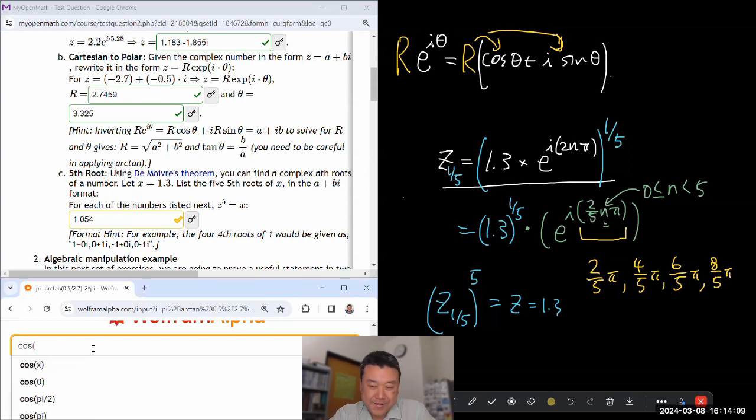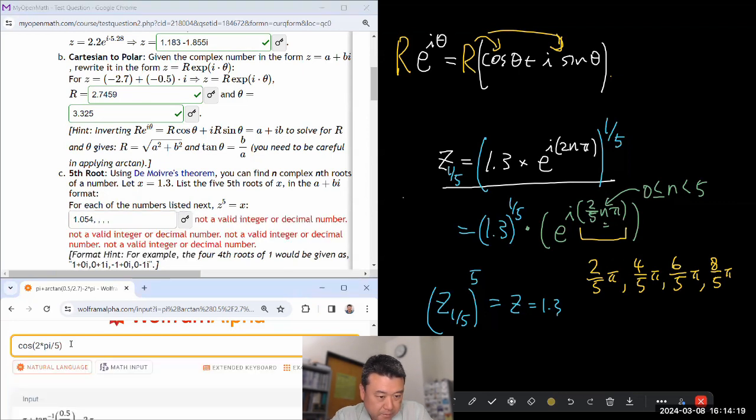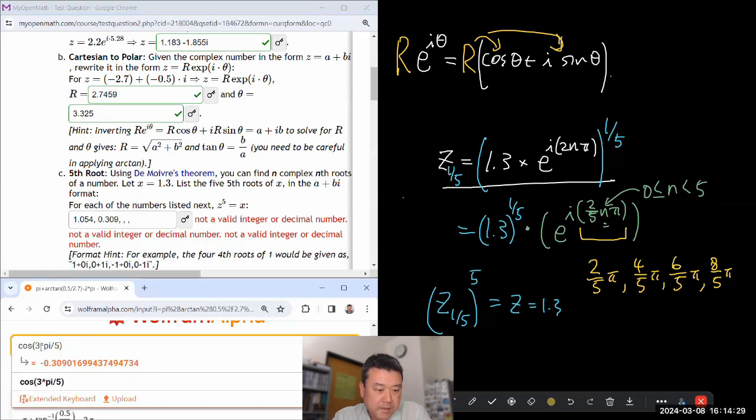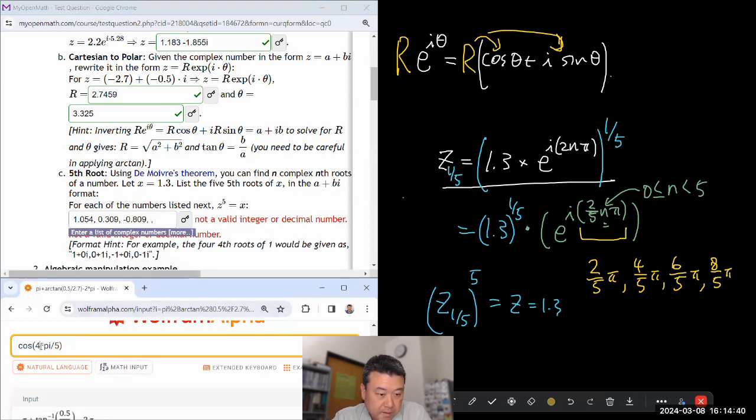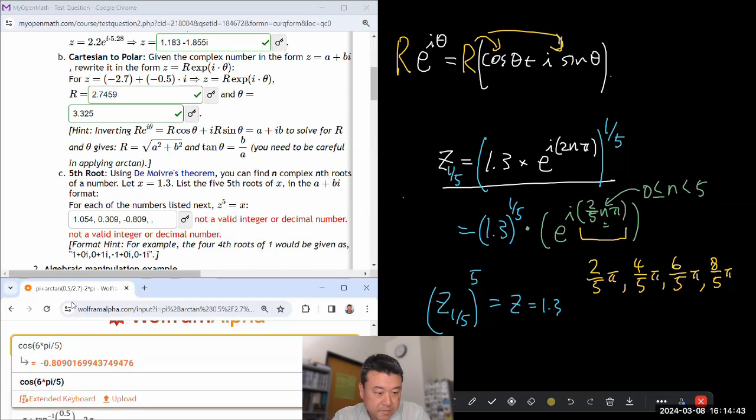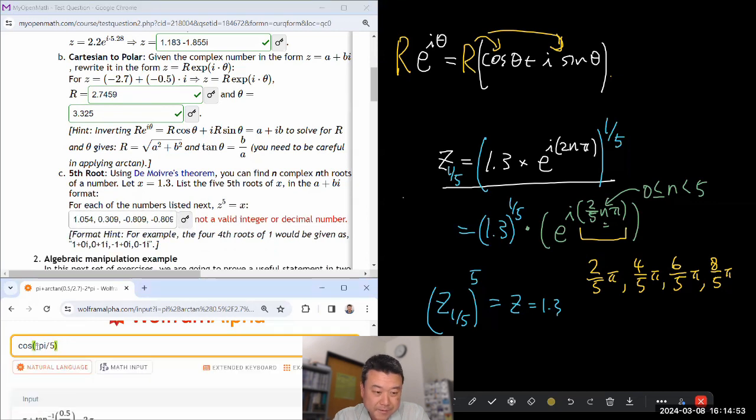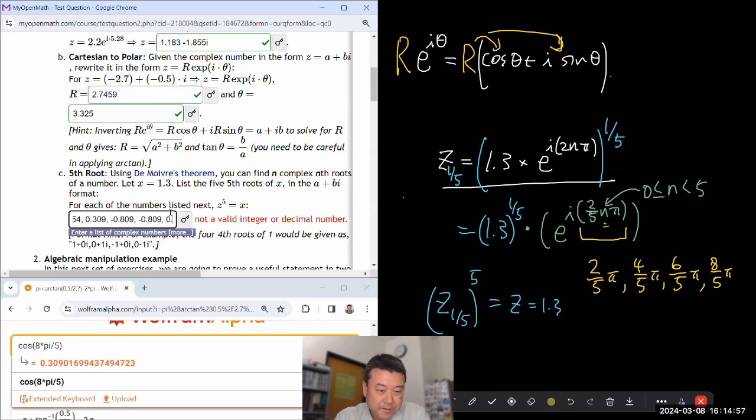For those four more, I think it's helpful for me to first write out all the different values of the angles. For n equals 1, I have 2 fifth pi. For n equals 2, I have 4 fifth pi. For n equals 3, I have 6 fifth pi. For n equals 4, I have 8 fifth pi. Once I have 10 fifth pi, that's 2 pi, same as 0 in this context.